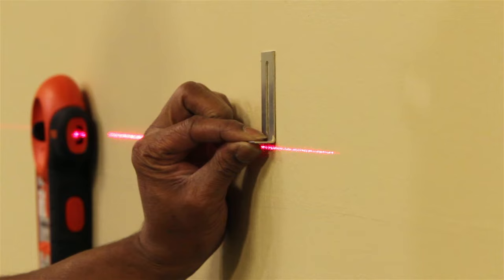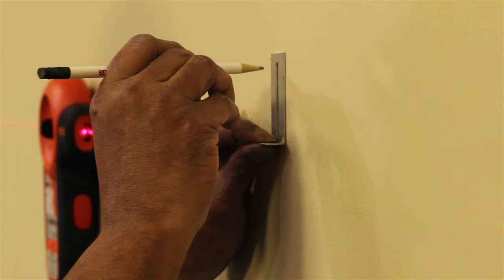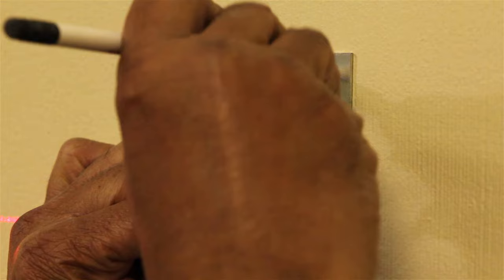Hold the mounting clip with a bend on the mark previously made with the longer tab up or in the vertical position. Make another mark at the top of the slot in the clip.